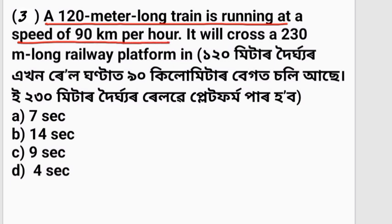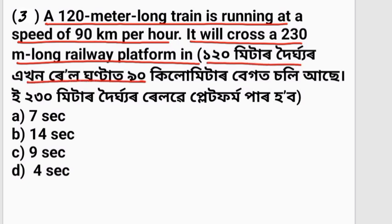Next problem: How long is the railway platform? A train is moving at a speed of 90 km per hour.